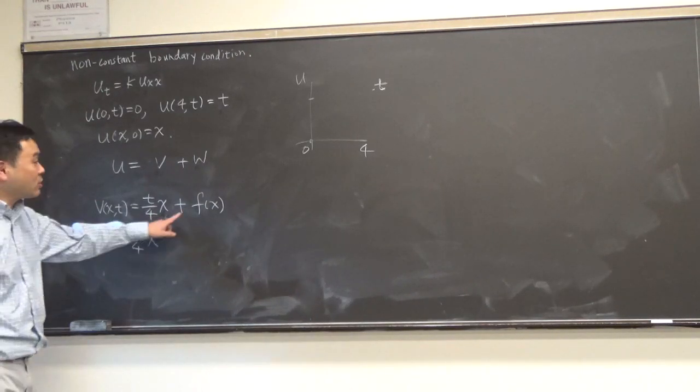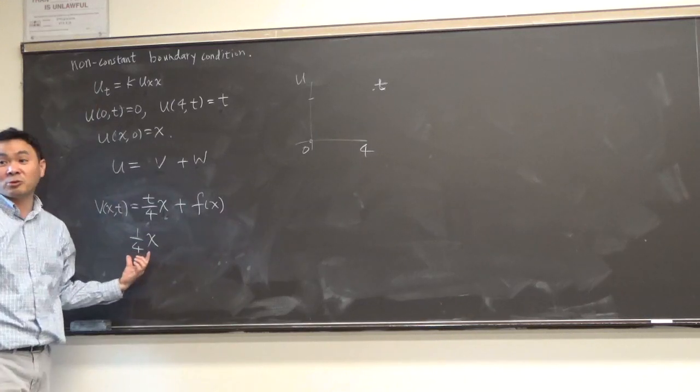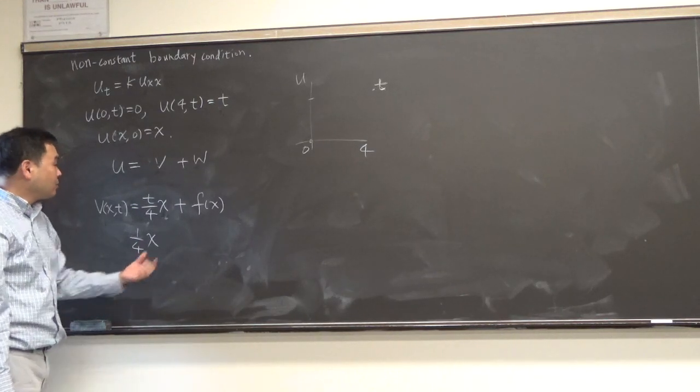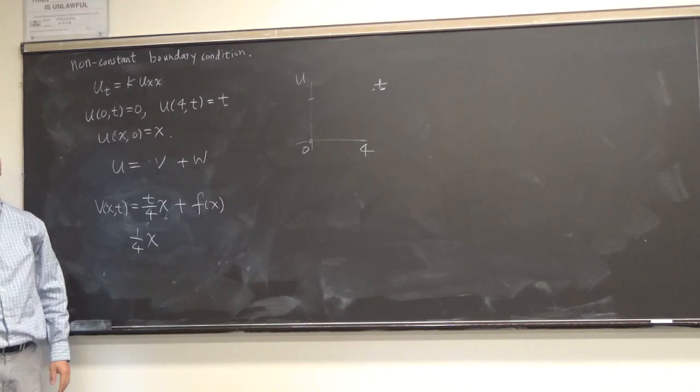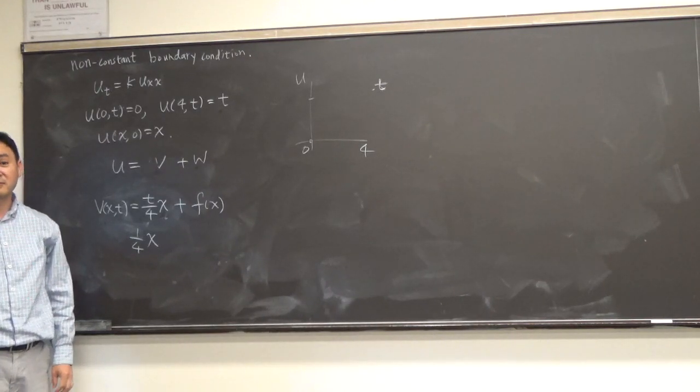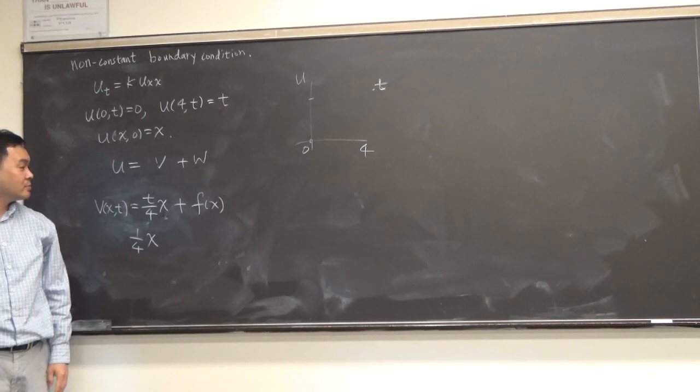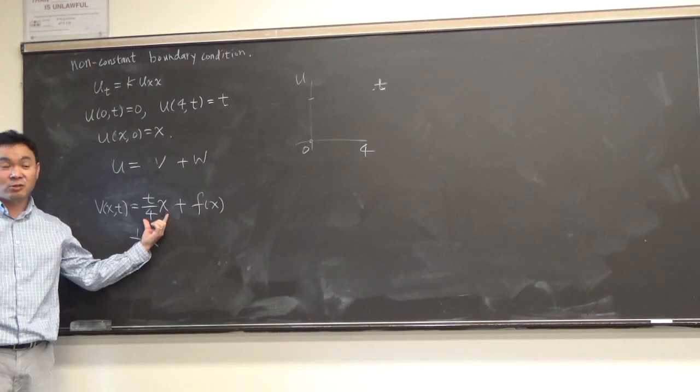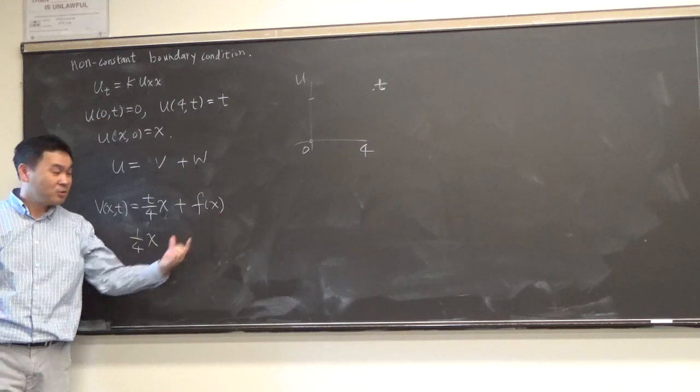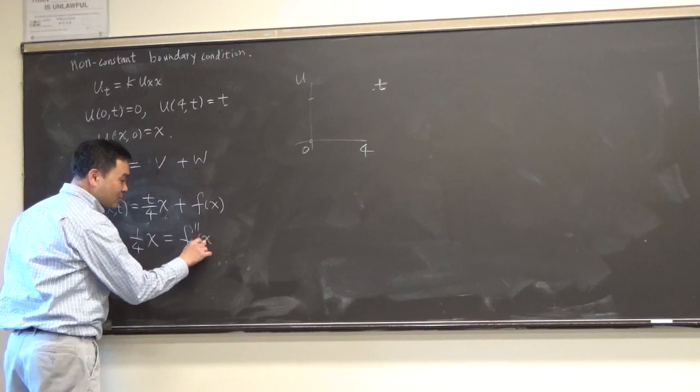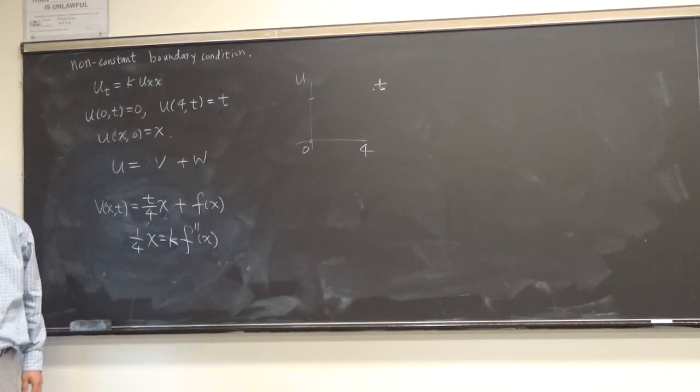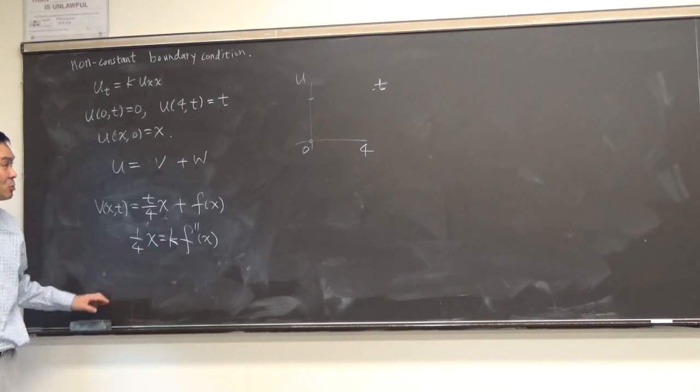If you plug this on the left side, it's just one-fourth of x. What do you think? Is that good? And then, if you plug this on the right side, what do you get? If you differentiate once, you get t over 4, right? So if you differentiate by x twice, what do you get? Zero. You get zero. So you only get this. So what you get is you get f double prime of x. Oh, there's a k there. Is that okay? All right. So we have that f double prime of x times k must be one-fourth of x.